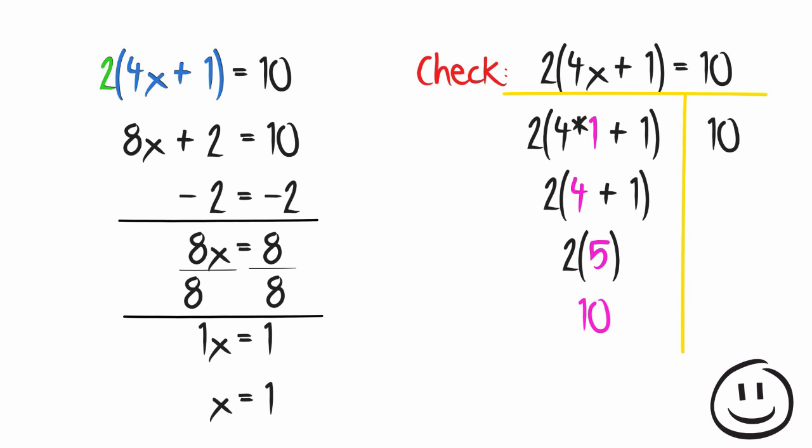2 times 5 is 10. We look on the other side of the equation. It's also 10. So the answer checks.